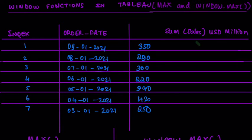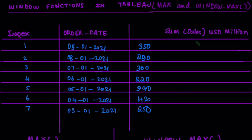MAX is going to take the maximum of all the records that are present in the dataset or in the table. So in this case, your answer is going to be 420 million dollars, because that is the highest sum of sales across all of the records present in the dataset.